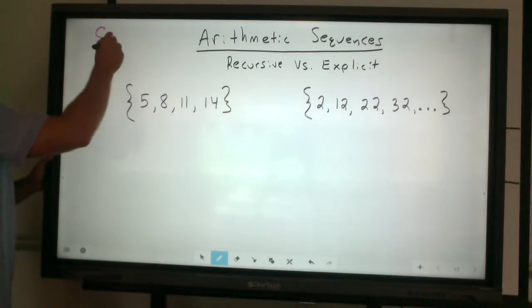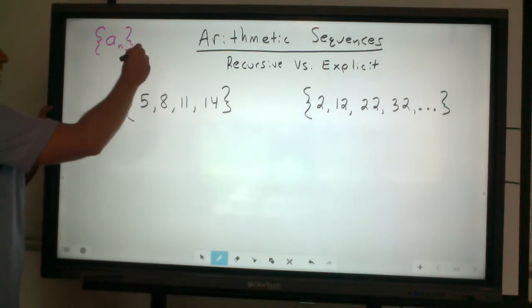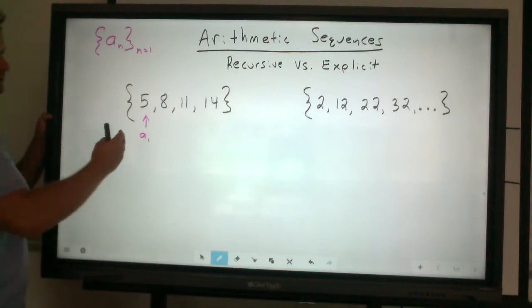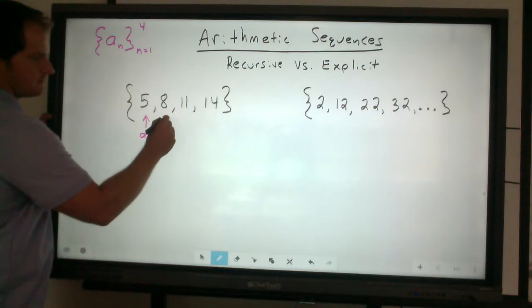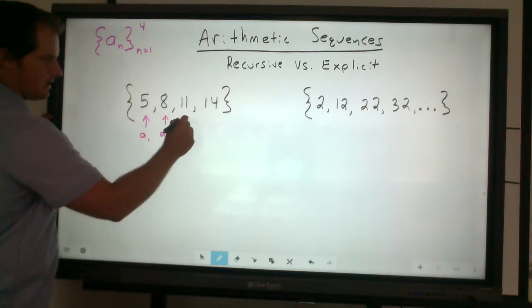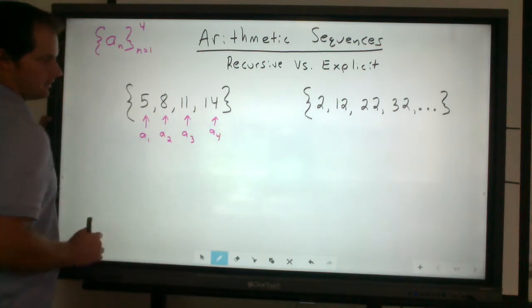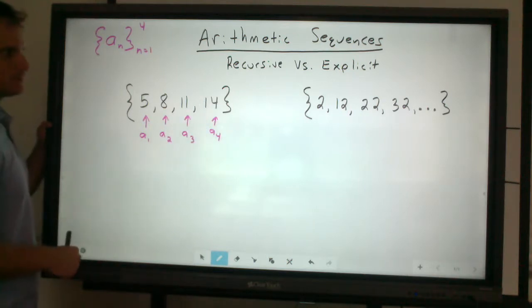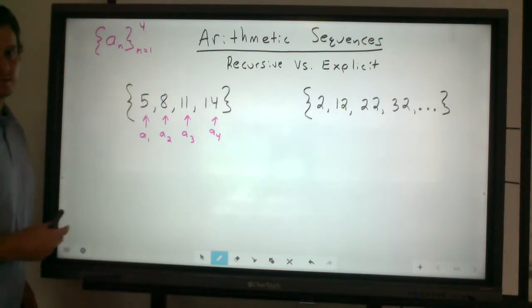So for this first one, our terms are limited in the fact that we have our first term, which happens to be 5, and that runs until the number 14, which happens to be the fourth term. Some of my students may actually write these values down in this fashion. Our first term is 5, and it happens to run to the fourth term, which is 14. A common mistake when identifying our limits is students will write 5 here and 14 above, which is not correct.